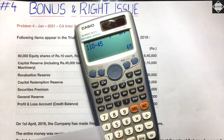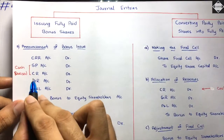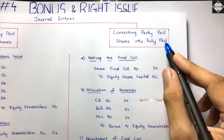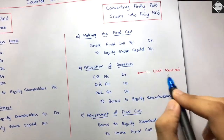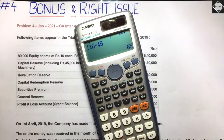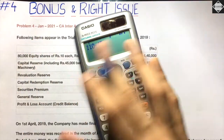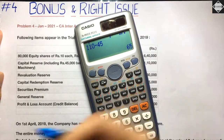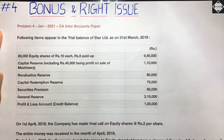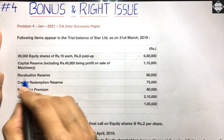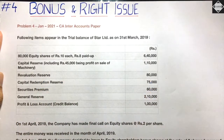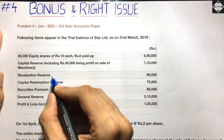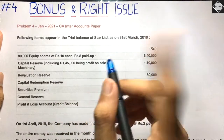You can only use ₹45,000 from capital reserve because in bonus issues we can only use capital reserve which is realized in cash. This same rule applies — whether for issue of bonus shares or for converting partly paid up shares into fully paid up, only the cash-realized portion of capital reserve can be used. The remaining cannot be used. Next, Revaluation Reserve of ₹80,000 — you cannot use revaluation reserve for bonus because it is an unrealized reserve.